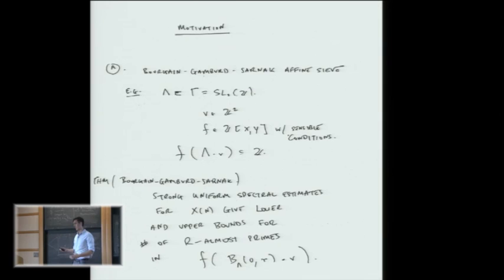Because it's a linear subgroup of a linear group, it acts on vectors in Z squared. So there'll be some orbit, right, lambda dot this vector is some set of things in Z squared. And if I have some polynomial f, I can put this orbit into f and see what comes out.